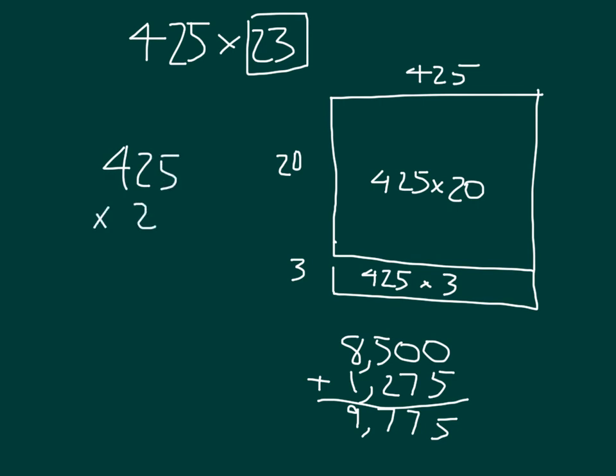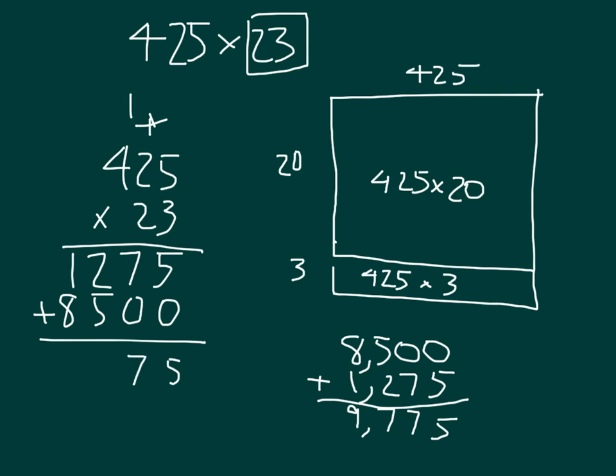Using the standard algorithm, 425 times 23. We set it up. 3 times 5 is 15, regroup of 1. 3 times 2 is 6, plus 1 is 7. 3 times 4 is 12. That 1,275, just like there. 425 times 2, dealing with that 2, we place a zero because it's worth 20. 2 times 5 is 10, regroup of 1. 2 times 2 is 4, plus 1 is 5. And 2 times 4 is 8. 8,500, just like I had figured out before. Carefully add them together, and I get that same product of 9,775.